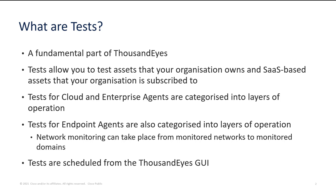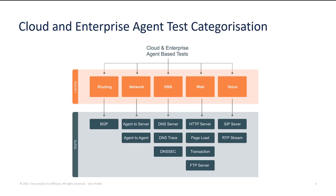Looking at the layering of tests, you can see how it's broken down for cloud and enterprise agents. On the top layers we've got routing, network, DNS, web, and voice tests — quite a few tests that can be covered when you look at what's contained within those layers.